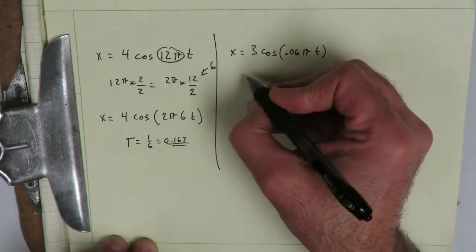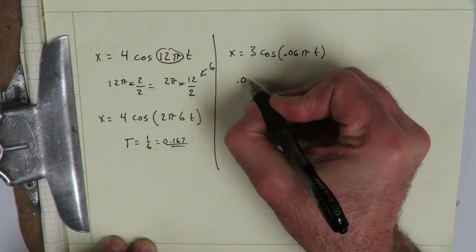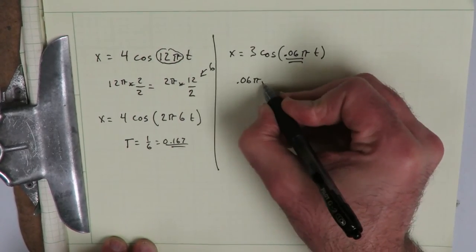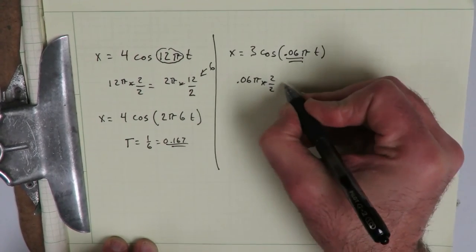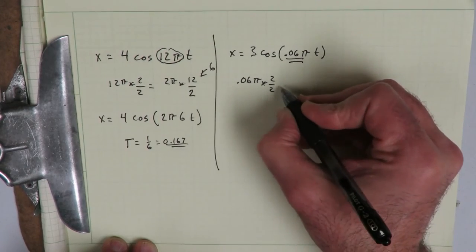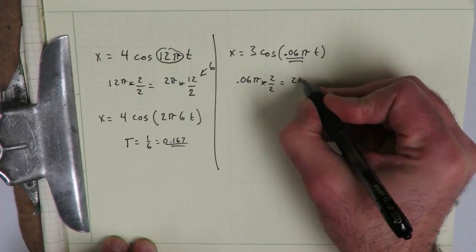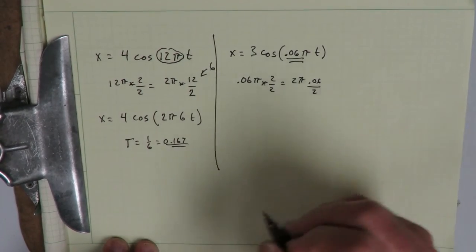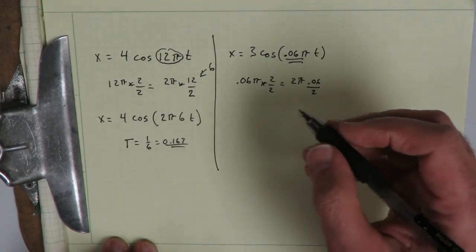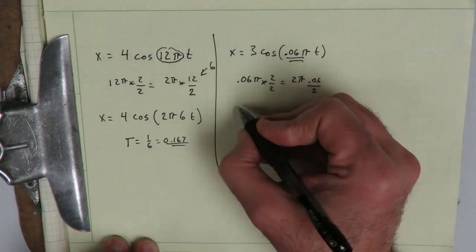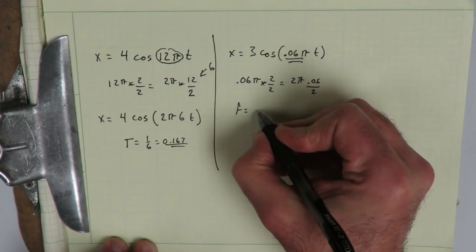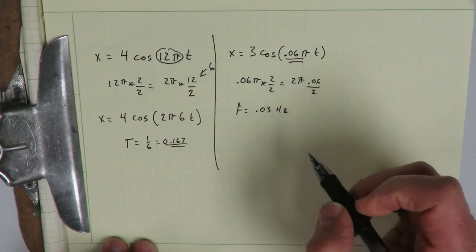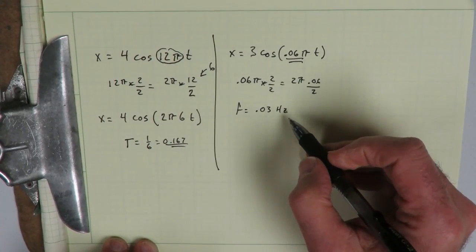Okay, welcome back. What we're going to do is take 0.06 pi, that's this part right here, multiply it by 2 over 2. And we wind up with 2 pi times 0.06 over 2. That's kind of a strange number. If we do the math here, we find that the frequency is equal to 0.03 hertz, 0.03 cycles per second. So this is a very, very slow period.